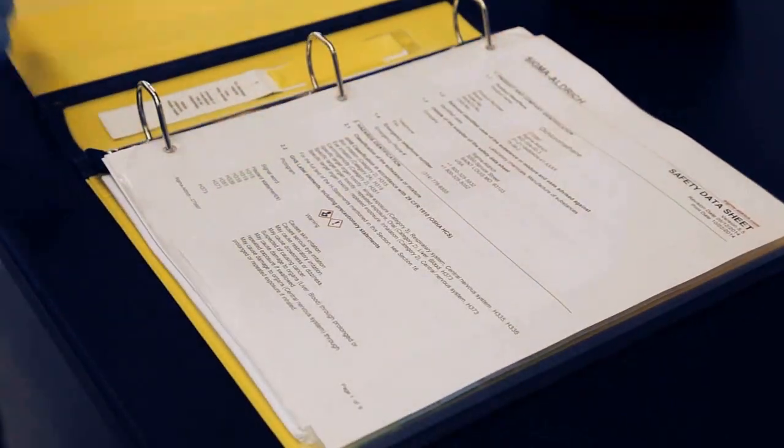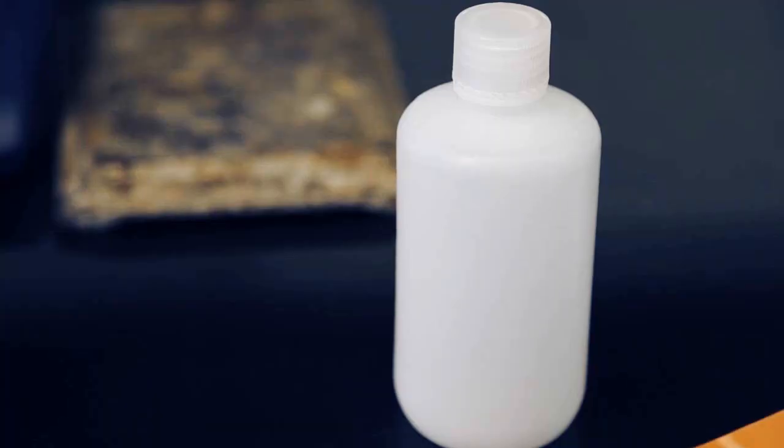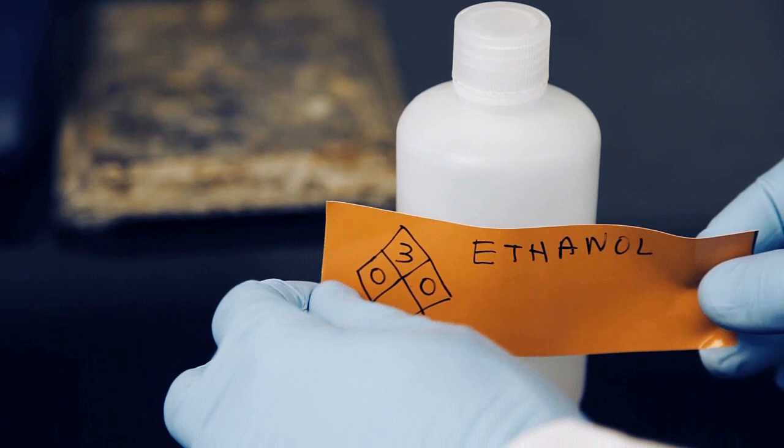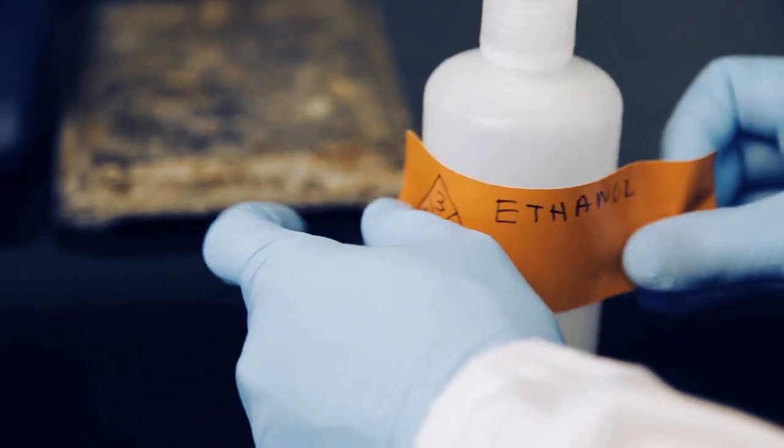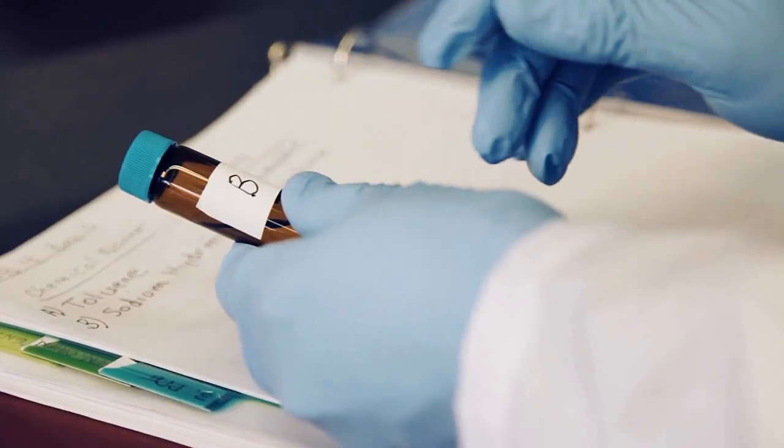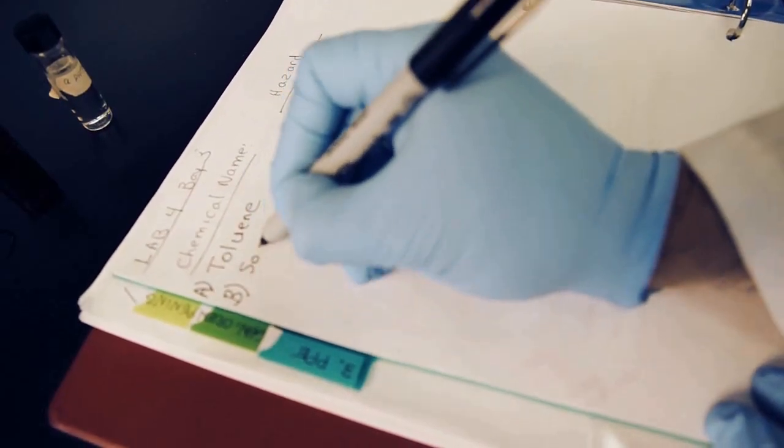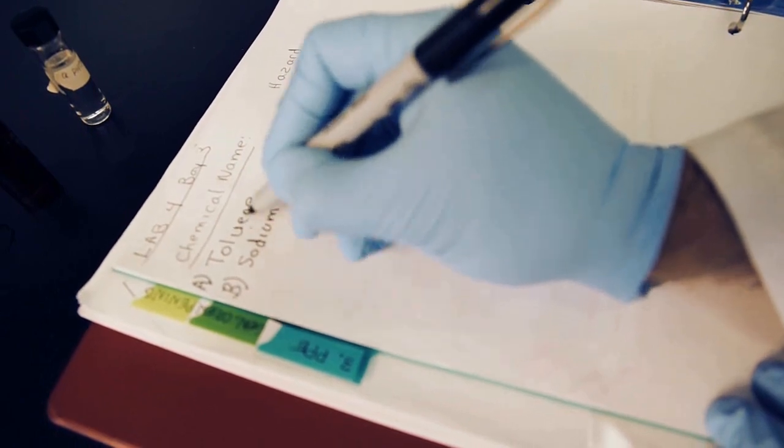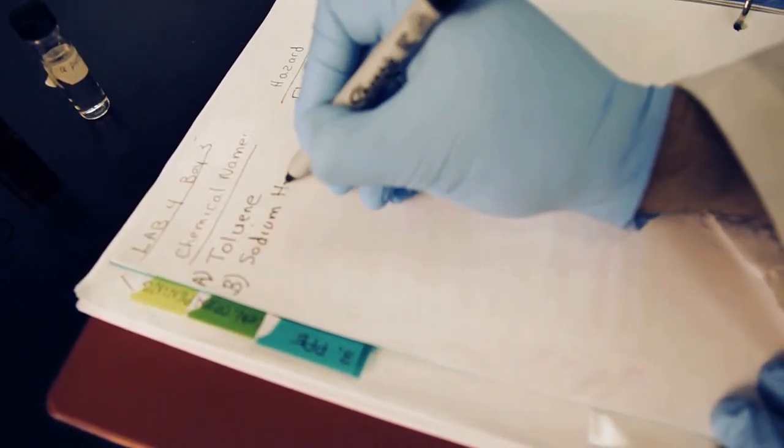The SDS is a good source for hazard information. Using a completed NFPA diamond on the label is another way to convey the hazard information. If it is not practical to label a very small container, the proper labeling information must be written on a sign or a research logbook near the container, which must be clearly visible to employees.